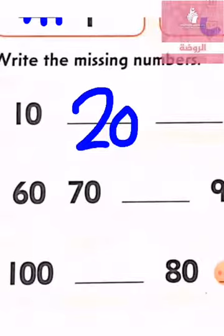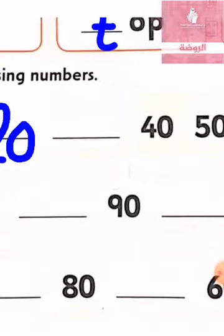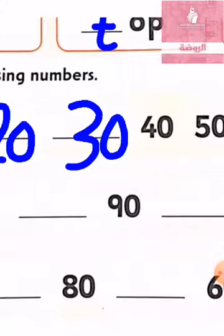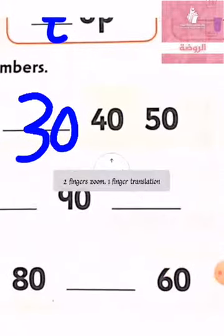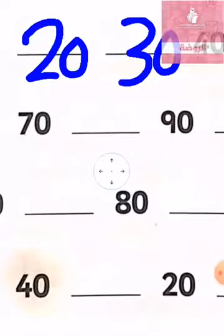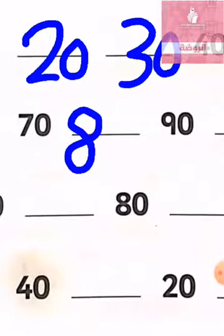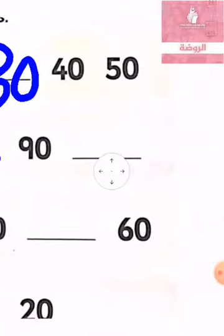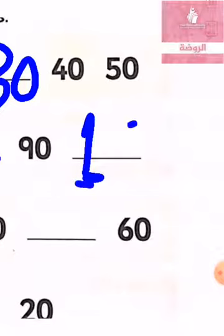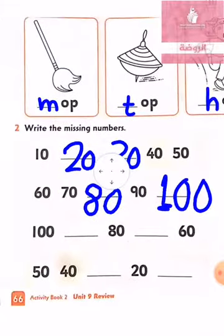After number 20, what do we have? Number 21? No — after number 20 we have number 30. After number 30 we have number 40, then 50, 60, 70, 80, 90, and the biggest number is number 100. Very good, one hundred — excellent!